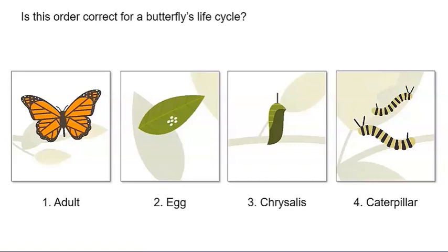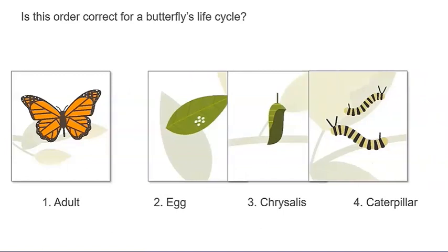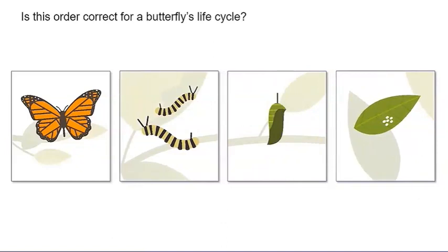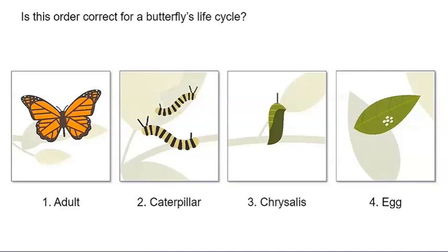However, I do think one of these cards is in the correct place. Which card is in the correct place? The chrysalis. I'll leave that card where it is and shuffle the others around. Now, is this order correct for a butterfly's life cycle? Adult, caterpillar, chrysalis, then egg? I think we're closer to the correct order. I know that a caterpillar forms a chrysalis, so I'll leave stages two and three where they are. But I think we need to switch the other two cards around.